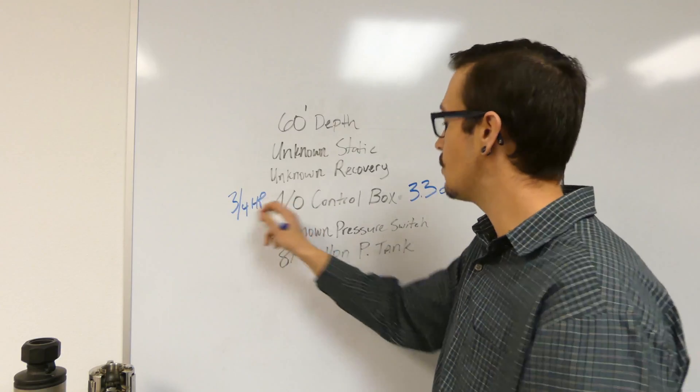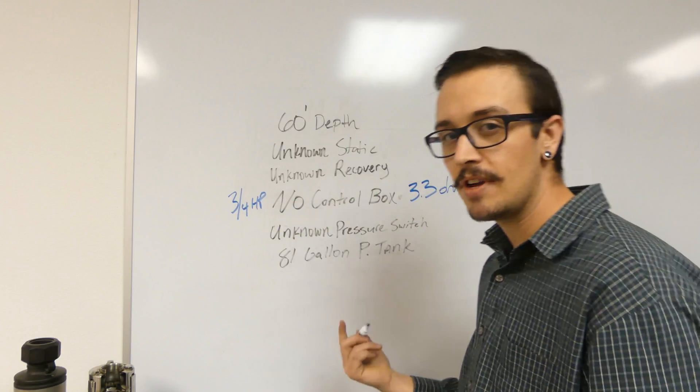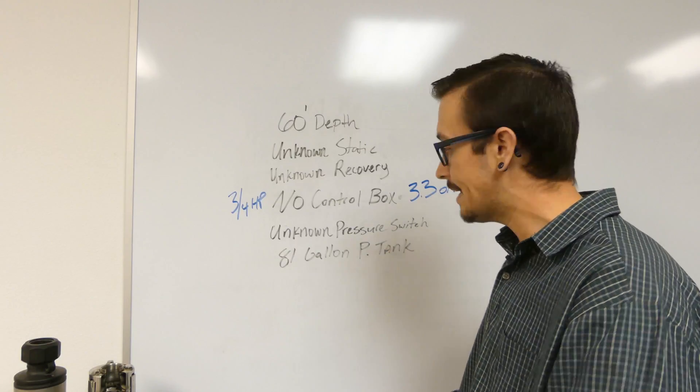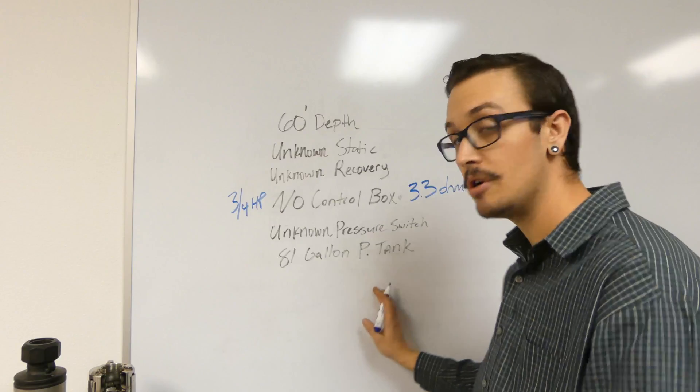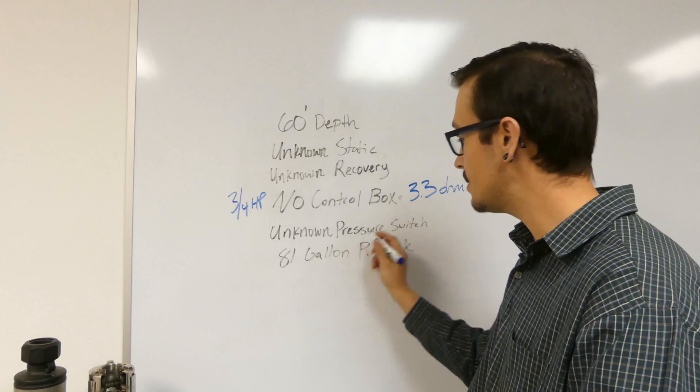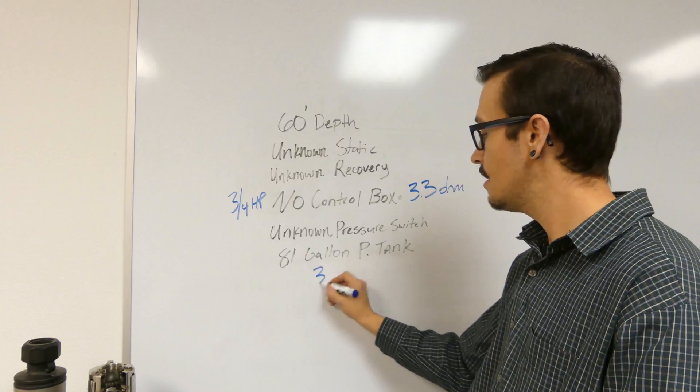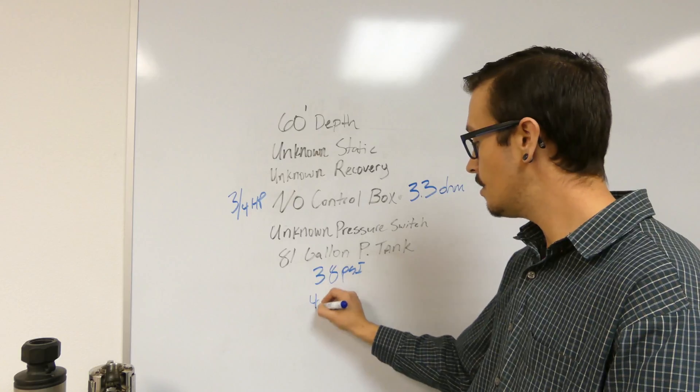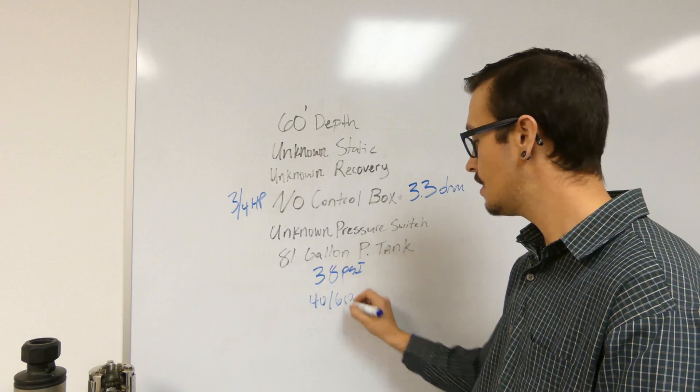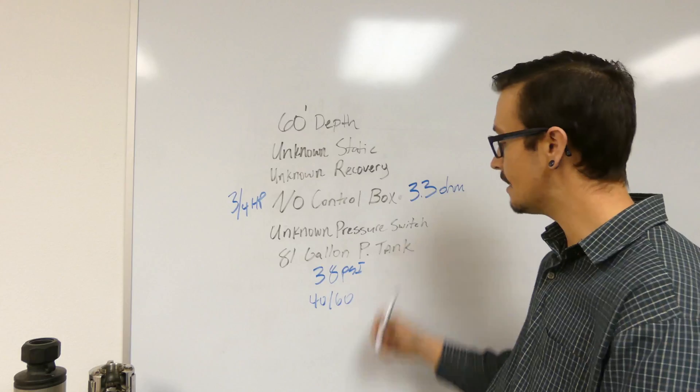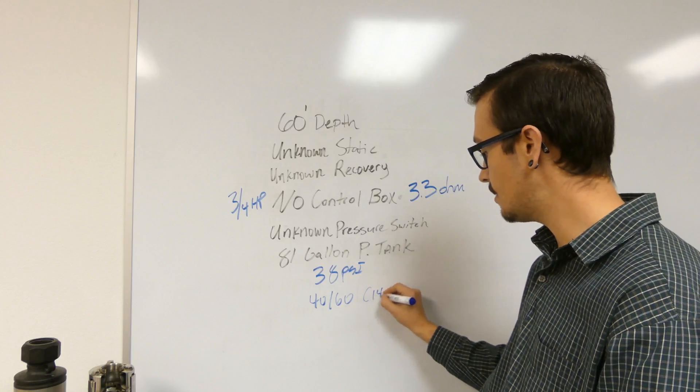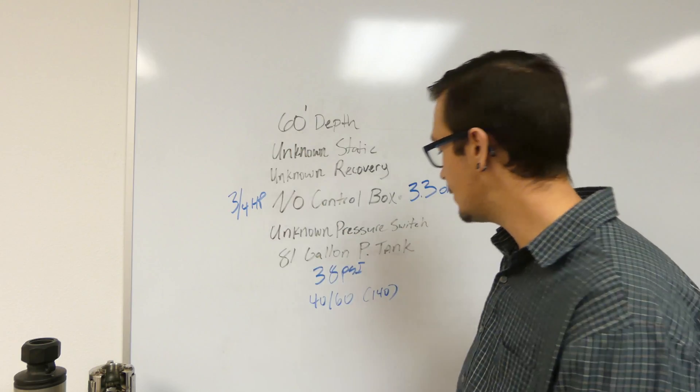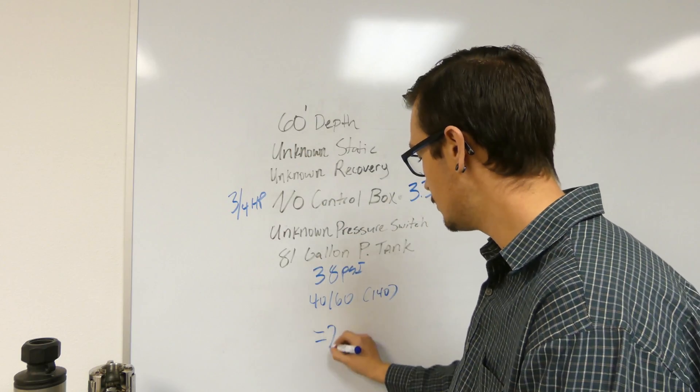So now that we know what the horsepower rating is, let's see if we can figure out what our total head is. We don't know what our pressure switch setting is, but we do have a pressure tank. So we're going to take the pressure of the pressure tank. What do you know - 38 PSI. Beautiful. So we know we're at 40-60 and we know that our total head is 140 feet, rough numbers, and then 60 feet. So that equals 200 feet.